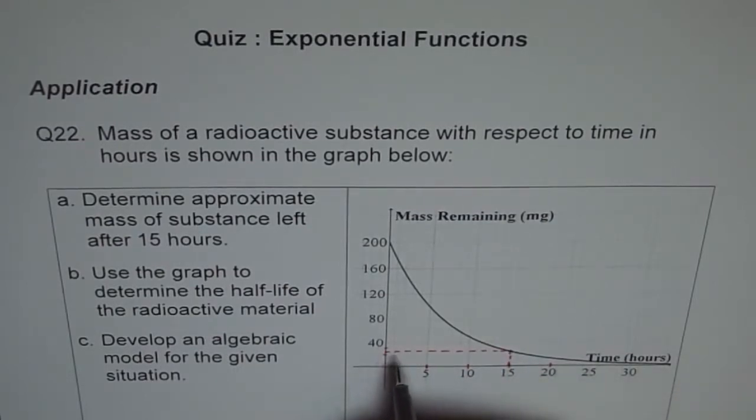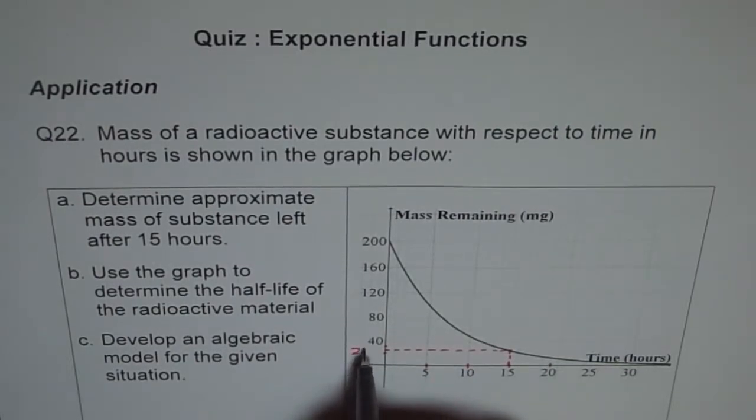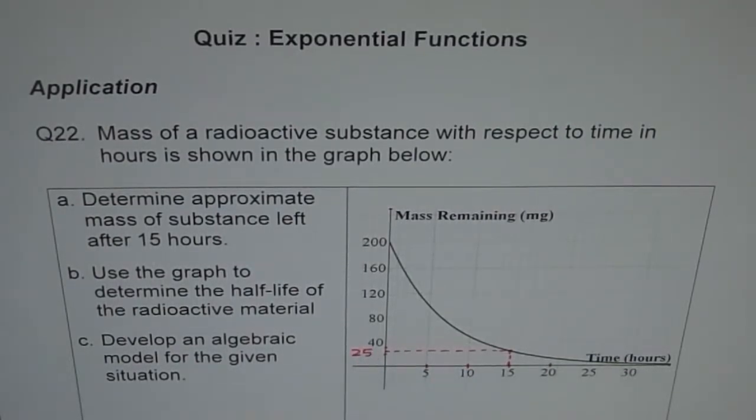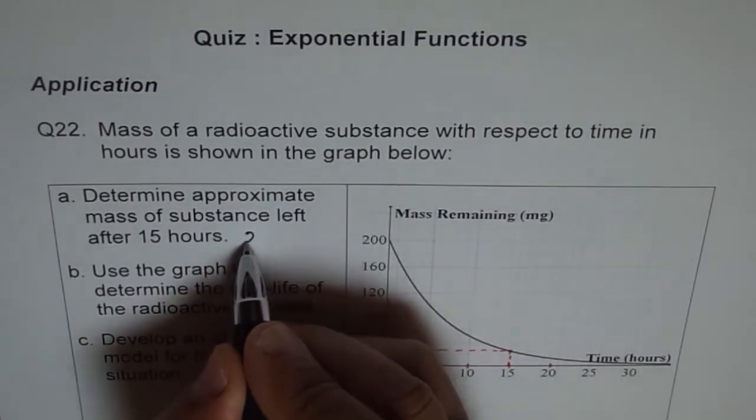This seems to be more than 20 and less than 30, so this is 25 for me. So it is 25 milligrams. From the graph, the amount of mass remaining is 25 milligrams.